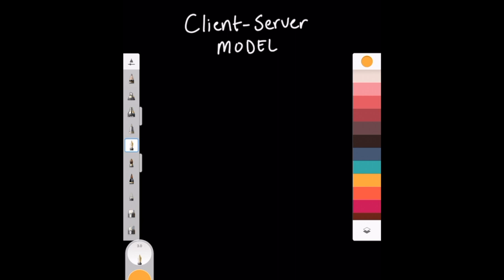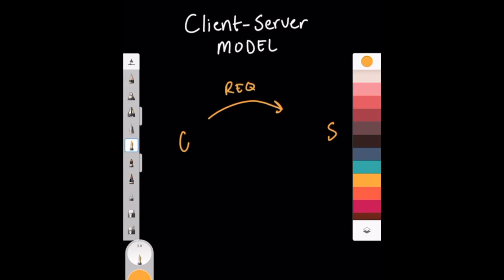What is the client-server model? Essentially, it's a commonly used paradigm in today's modern systems, which consists of a client requesting some data from a server and a server sending some data back to that client. Let's call our client C and our server S — when the client reaches out to the server, it sends a request and the server sends back a response.